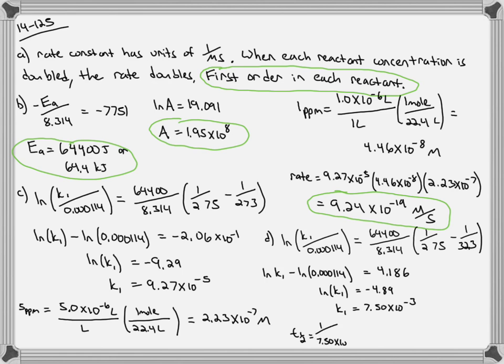We can then use the second-order half-life equation: half-life equals 1 over k times concentration, both in the denominator. The concentration given is 5.0 times 10 to the negative 7. This gives a half-life of 2.67 times 10 to the 8 seconds. Converting seconds into years, we get approximately 10.50 years.